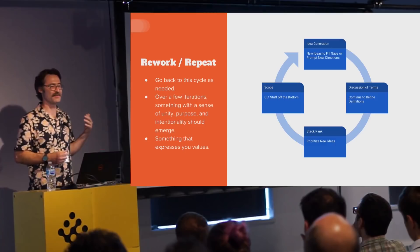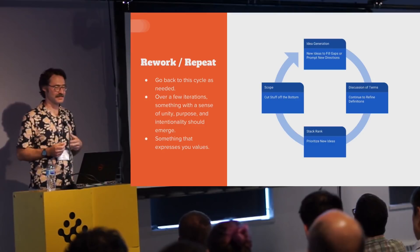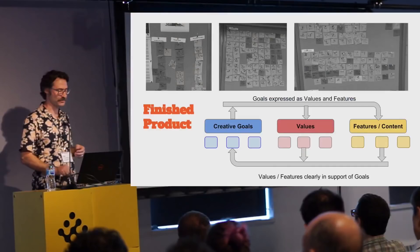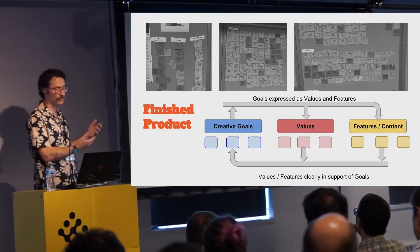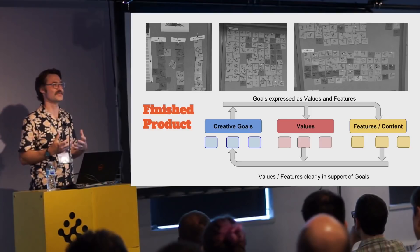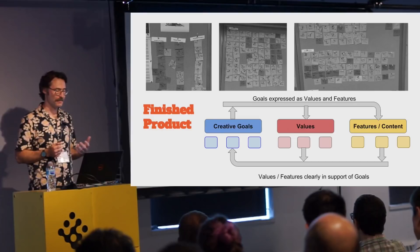You repeat that as needed — go back to brainstorming if you don't have enough ideas, defining them if they're too vague, ranking them if you're still arguing. Over a few iterations you should arrive at something that feels coherent, with a sense of unity, purpose, and intentionality — and most importantly, expresses the things that your team really values. A good Big Board has high-level goals clearly expressed in values and features, with lower-level content that contributes directly to higher-level goals.